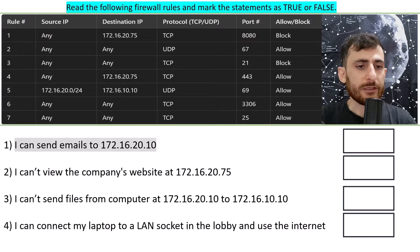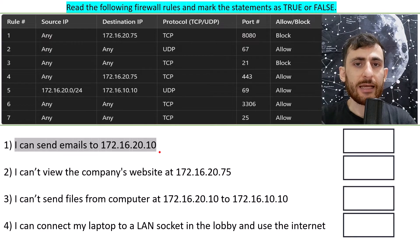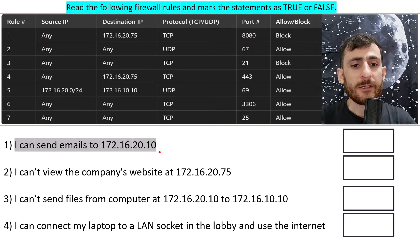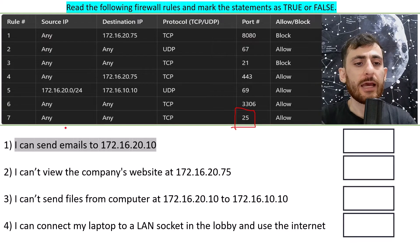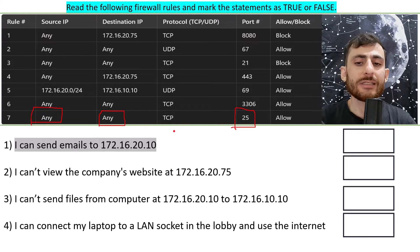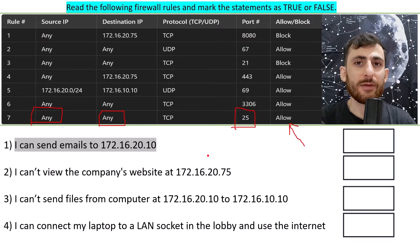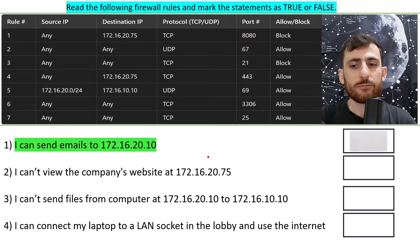Let's go for the first one. It says: I can send emails to 172.16.20.10. Sending emails is usually via SMTP, and we have on rule 7, port 25 in relation to SMTP. We can use any source and any destination to use this rule, which is allowed. Thus, it's going to make this statement true — a pretty easy warm-up.